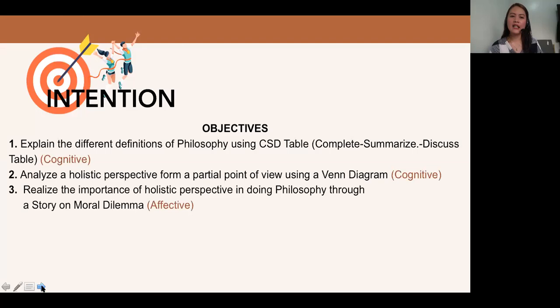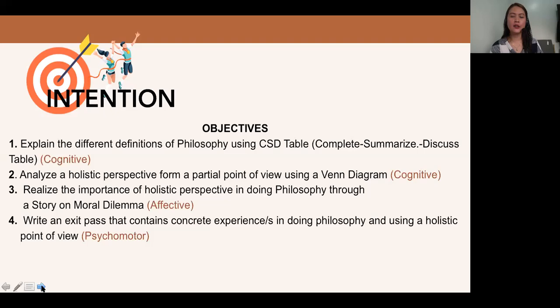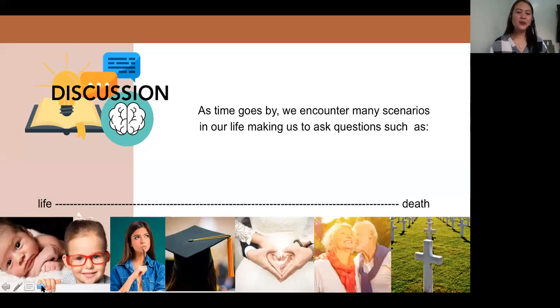Analyze a holistic perspective from a partial point of view using Venn diagram, cognitive. Realize the importance of holistic perspective in doing philosophy through a story on moral dilemma, affective. Four, write an exit pass that contains concrete experiences in doing philosophy and using a holistic point of view, psychomotor.